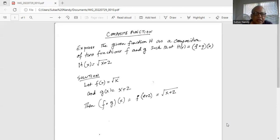So the two functions are F(x) equals square root of x and G(x) equals x plus 2, and F composite G(x), or the composition of F and G, is square root of x plus 2.